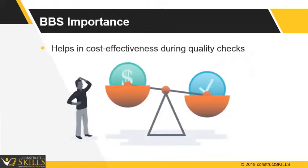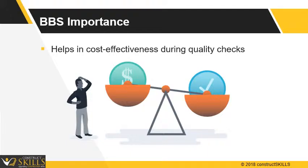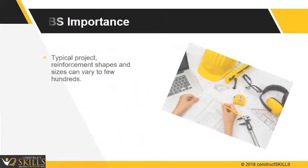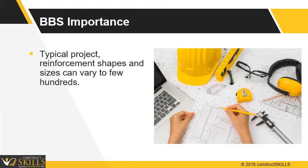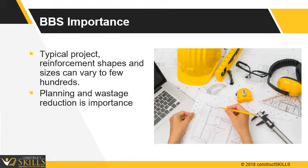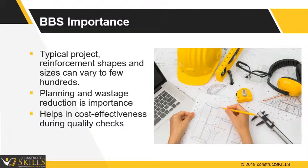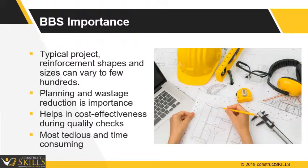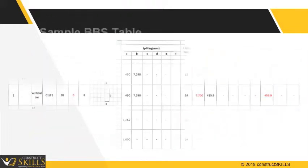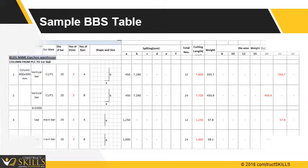BBS also helps in cost-effectiveness during quality checks. In some typical projects, reinforcement shapes and sizes can vary to a few hundreds. Planning and wastage reduction is very important, which helps in cost-effectiveness, but it is the most tedious and time-consuming process. Here, a sample sheet of the bar bending schedule table is shown.